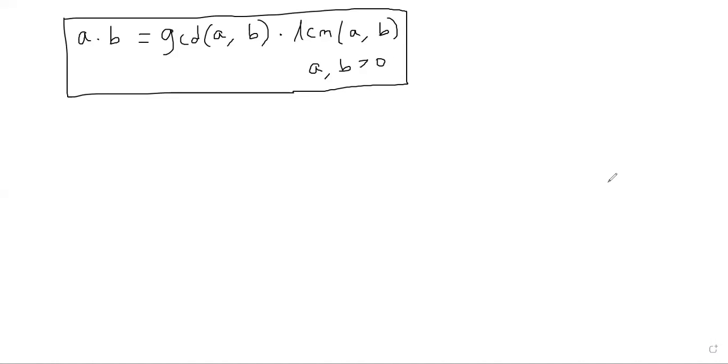Hello, welcome back. In this segment, I want to prove this theorem that connects GCD and LCM. Suppose you have two positive integers A and B, meaning greater than 0. We can conclude that A times B is the same as GCD of A,B times LCM of A,B.